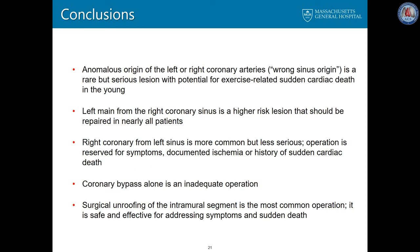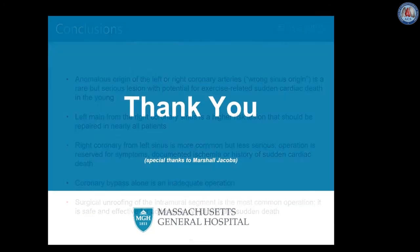In conclusion, anomalous origin of the left or right coronary arteries — so-called wrong sinus origin — is a rare but serious lesion with potential for exercise-related sudden cardiac death in the young. Left main from the right coronary sinus is a higher risk lesion that should be repaired in nearly all patients. Right coronary from the left sinus is more common but less serious; operation is generally reserved for symptoms, documented ischemia, or a history of sudden cardiac death. Coronary artery bypass alone is usually an inadequate operation. Surgical unroofing of the intramural segment is the most common operation; it is safe and effective for addressing symptoms and sudden cardiac death. Thank you.